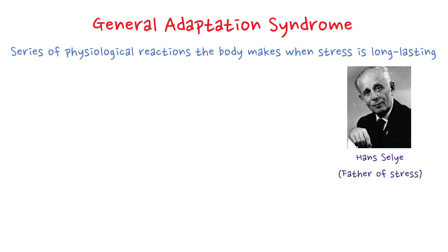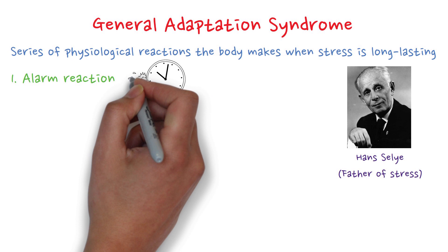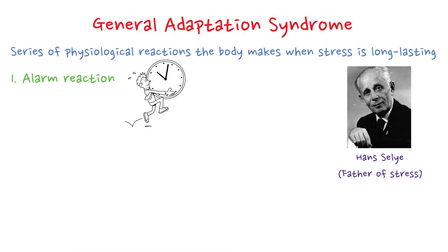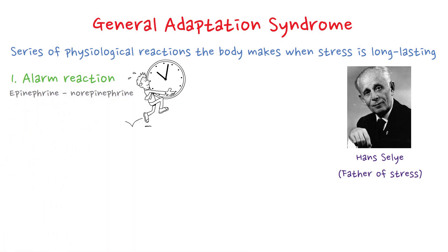The first stage of GAS is an alarm reaction. It's basically the fight-or-flight response to an emergency. The sympathetic nervous system gets activated, resulting in adrenal gland activation and the release of epinephrine and norepinephrine. There is also a slowed response from the HPA axis, resulting in cortisol release.